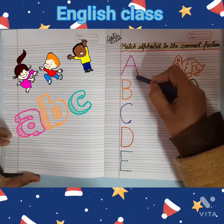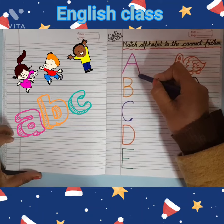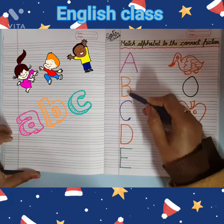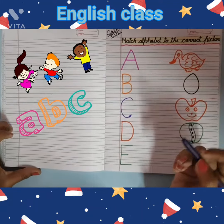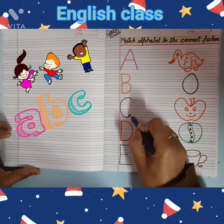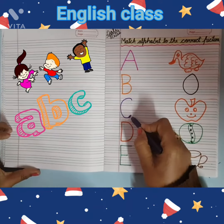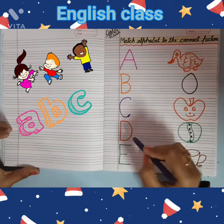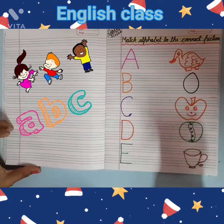Which alphabet is this? A. And next? B. And next? C. And after then C? D. And last, E.